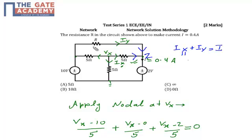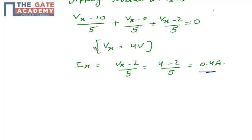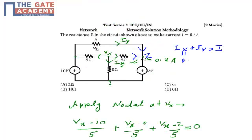Here Ix I have just calculated, which is equal to 0.4 ampere. Iy I don't know. And I is already given in the problem, it is 0.4 ampere. So 0.4 ampere and 0.4 cancel. So my Iy is 0.